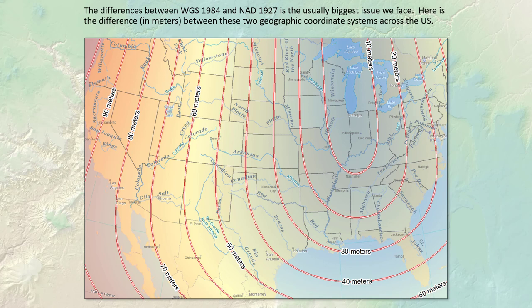The biggest datum-related issue in the United States is usually the difference between WGS 84 and NAD 27, because so much old NAD 27 data is still floating around. The difference in meters between these two coordinate systems varies across the country — from around 66 meters in Flagstaff up to over 90 meters in California. Chicago seems to be about the one place in the United States where they actually line up.